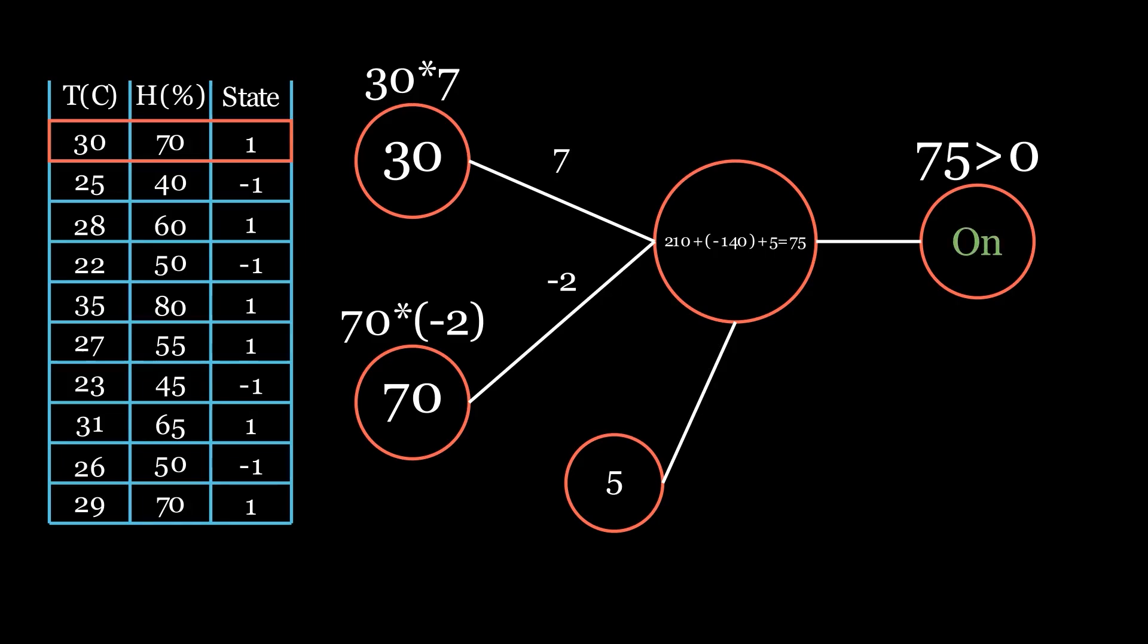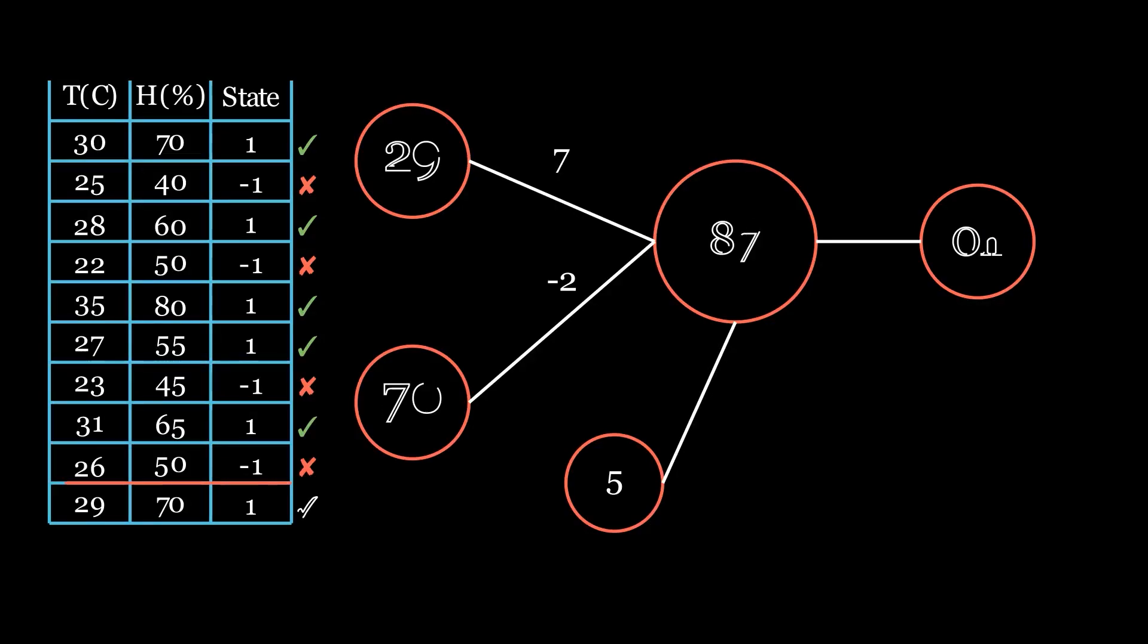As you can see, the first row is classified correctly. So let's check if our randomly picked weights are correct by doing this for every row in the training set. As you can see, the results are completely off.